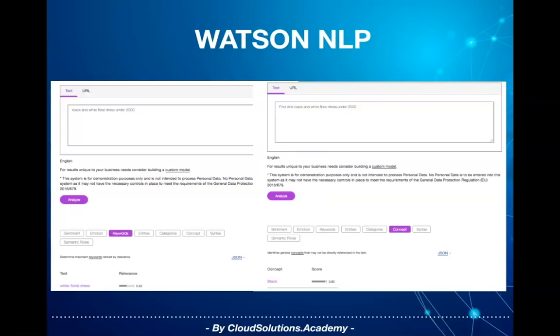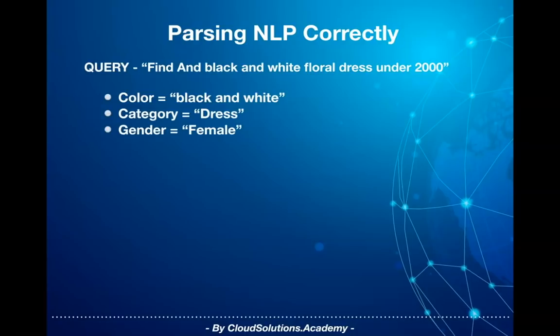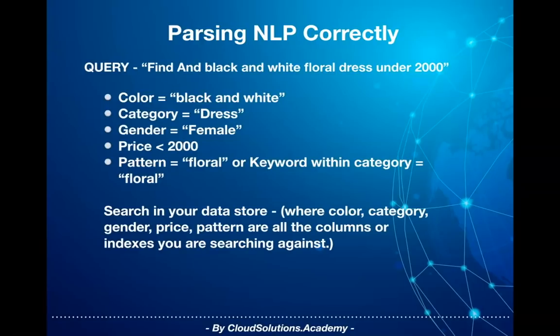For instance, the above query should result in: color as black and white, category as dress, gender as female, price less than 2000, pattern as floral or as a keyword within the category — where color, category, gender, price, and pattern can all be columns or indexes you are searching against.